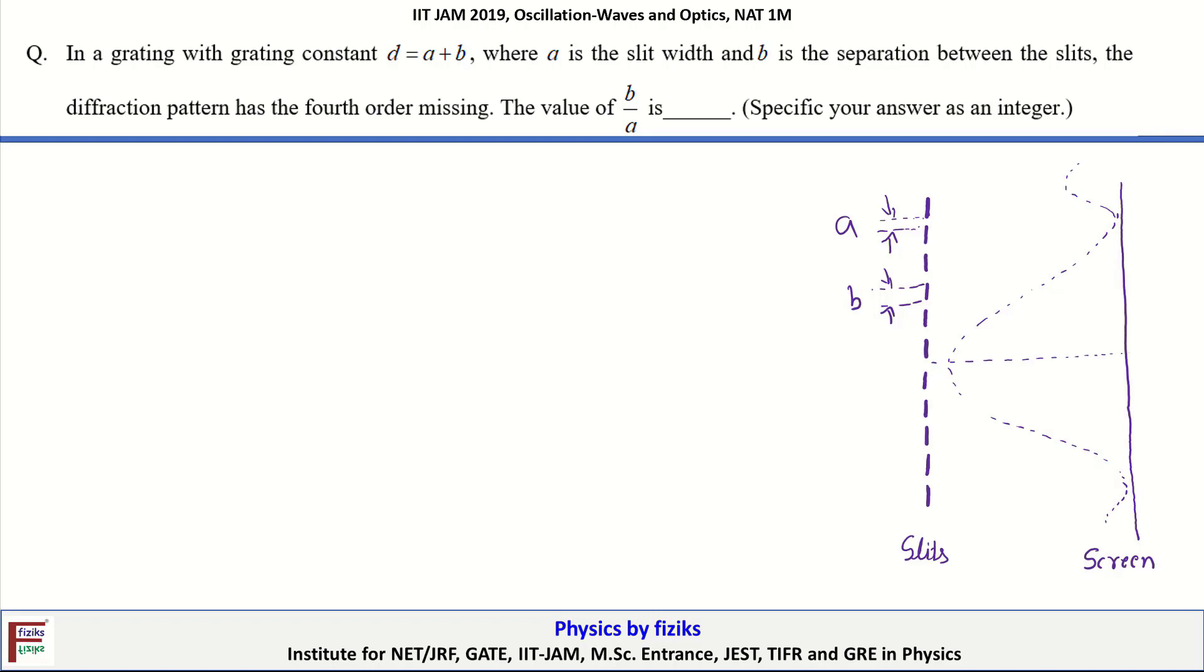We can write down the condition for the diffraction maxima by this mathematical equation: A sin theta equal to n lambda, where this n can take any integer value starting from 1, 2, 3 and so on, where n equal to 1 represents the location for the first minima.